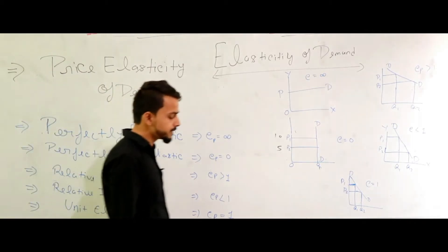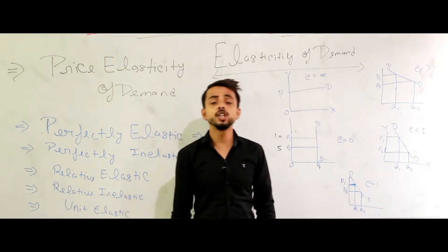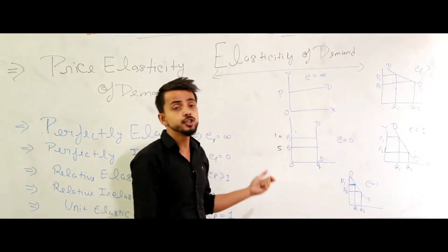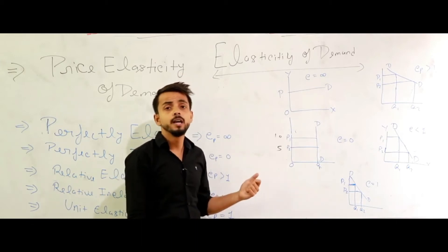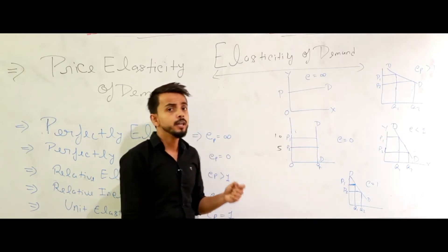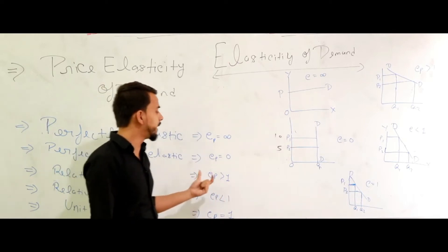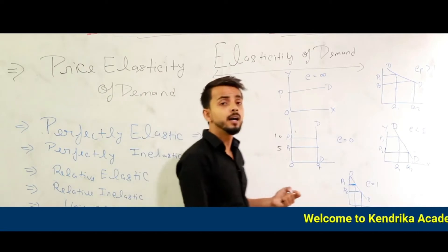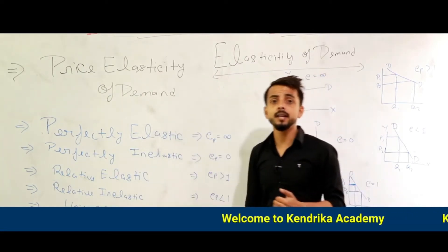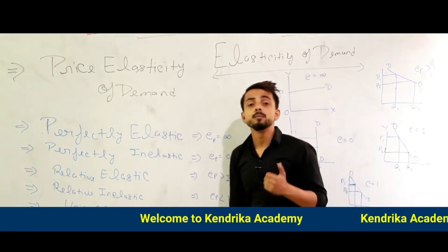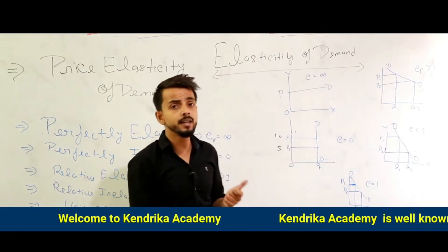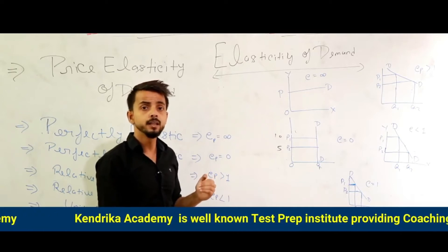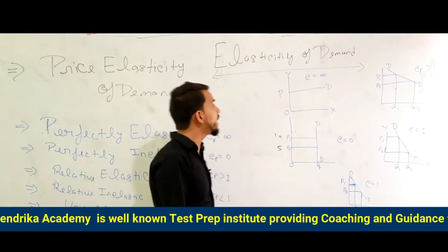The next type is relatively elastic demand. What is relatively elastic demand? When the change in demand is more than the change in price, it is called relatively elastic demand. Here the price elasticity of demand is greater than one. Price elasticity of demand is greater than one in cases where the change in demand is more than the change in price.